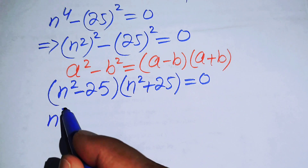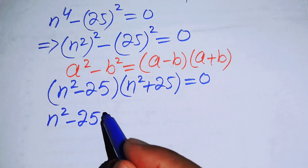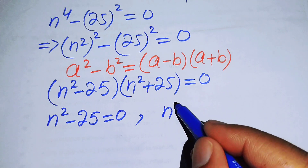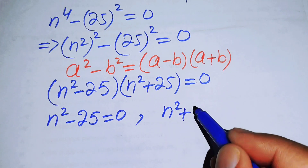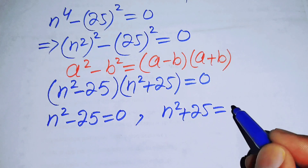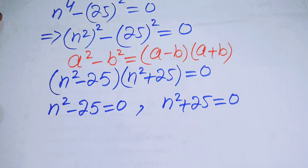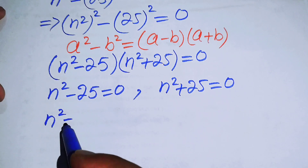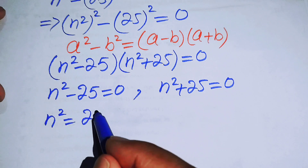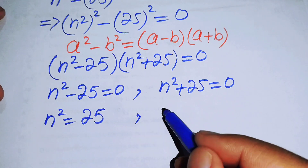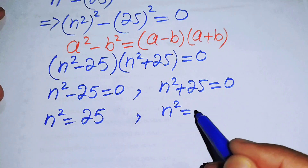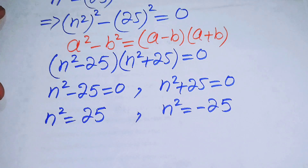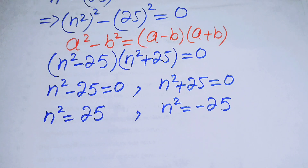In the next step we have two cases. The first case is n squared minus 25 equals 0, and the second case is n squared plus 25 equals 0. In the first case we get n squared equals 25, and in the second case we get n squared equals minus 25.